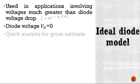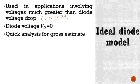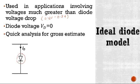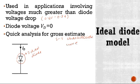This model provides very quick analysis for a gross estimate. Now look at this. This is an ideal diode. What is the IV characteristic curve of this ideal diode model?